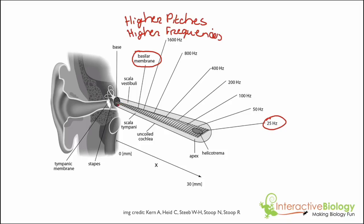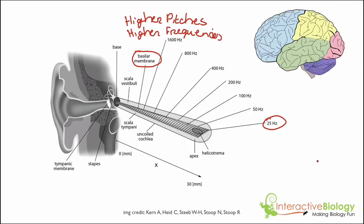If the frequency is low enough, it might actually cause the entire basilar membrane to vibrate. The take-home message is: depending on the frequency, we're going to get different regions of the basilar membrane vibrating. This then sends a signal to the brain. Depending on where that signal is coming from — if it comes from the thicker region — the brain is going to interpret that as a lower pitch.